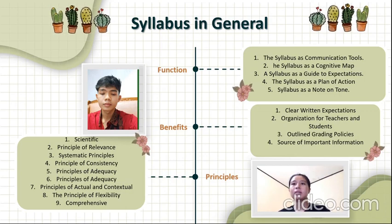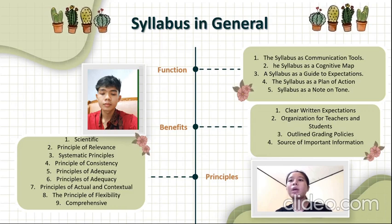The third is the systematic principle. The systematic principle provides direction that the preparation of the syllabus should be system-like and systematic. If the syllabus is seen as an outline system for a systematic learning program, the syllabus components should be synergetic in achieving basic competencies. The components in the syllabus must be functionally interconnected in achieving competence, because the syllabus is basically a system and therefore the preparation must be done systemically.